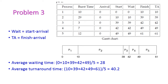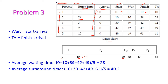Now let us see another problem. Here 5 different processes are there and the corresponding burst time is also given. If they don't give any arrival time, we have to assume the arrival time is 0 for all the processes — that is, in the beginning itself every process comes to the ready queue. Using the Gantt chart we compute starting time and finish time. Starting time of P1 is 0 and burst time is 10, so finishing time of P1 is 10. Starting time of P2 is 10 and burst time is 29, so 10 plus 29 equals 39; starting time of P2 is 10, finishing time is 39.